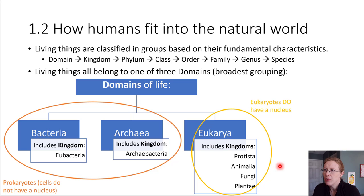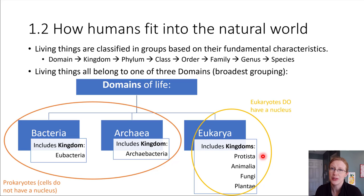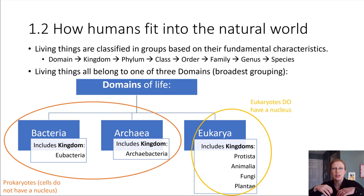Within eukarya, we can consider whether organisms are unicellular or multicellular. If they're unicellular and eukaryotic, they're going to fall in the protista — single-celled organisms that are eukaryotic and have a nucleus around their DNA. If they are instead multicellular, then they're going to fit in one of three kingdoms. Domain is the broadest classification scheme, and kingdom is the next level down, a little more specific.